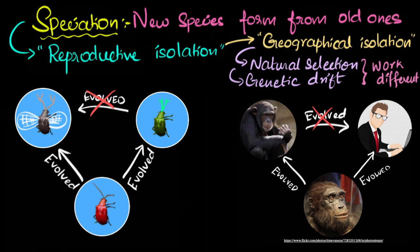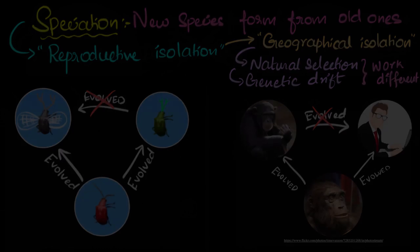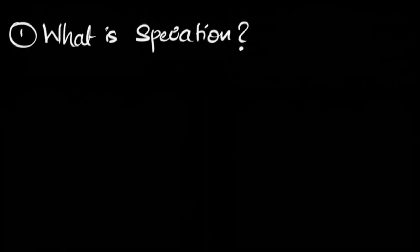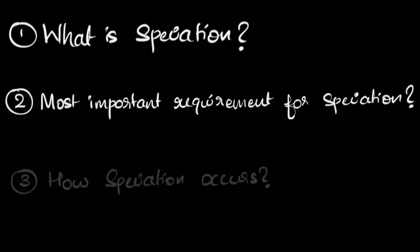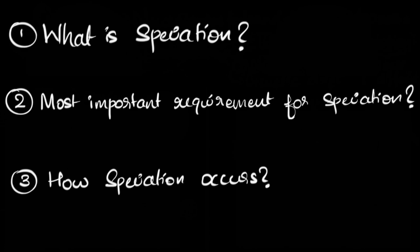Let's quickly recall what we learned. Can you recall what speciation is? What do you think is the most important requirement for speciation? And can you explain to yourself or your friends how speciation occurs? If you have difficulty answering any of these questions, no worries — you can always go back and revisit the video.